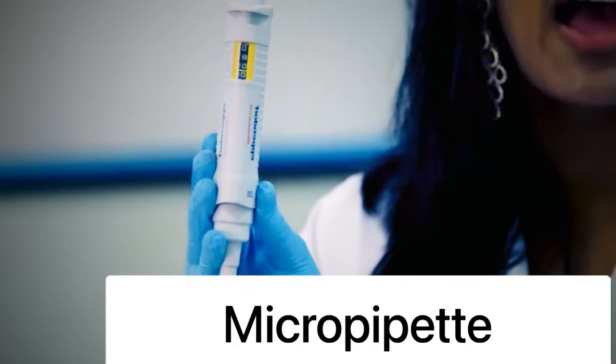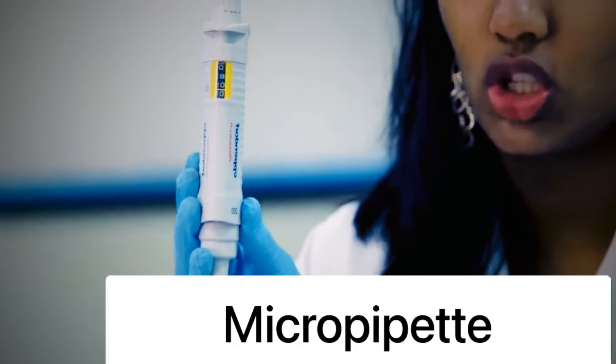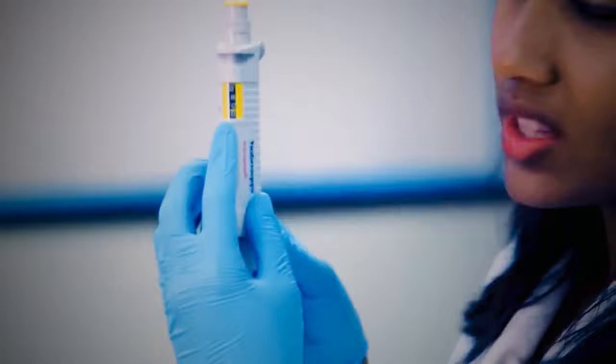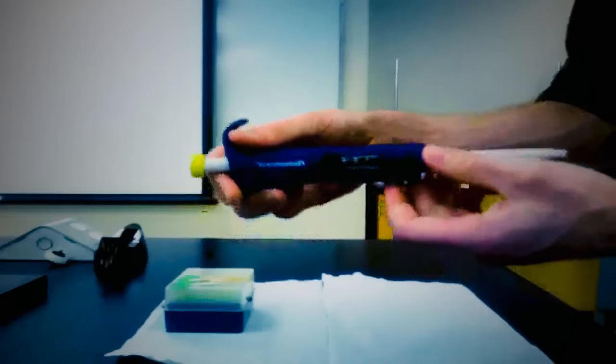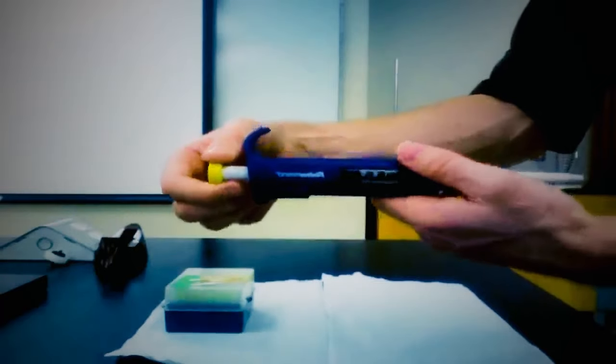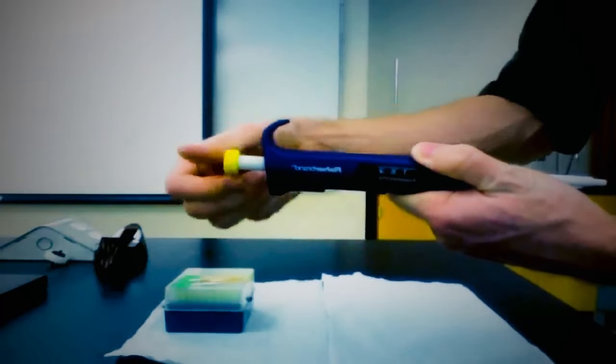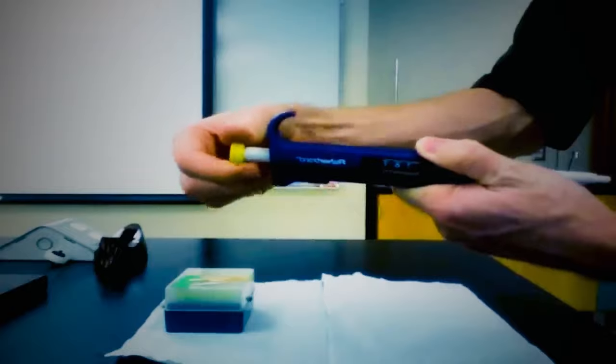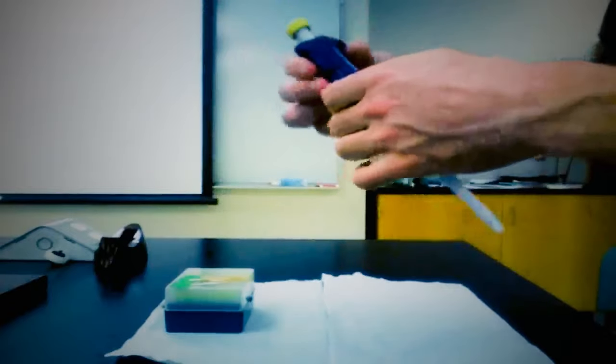Micropipet. Pipets and micropipets are invaluable pieces of laboratory equipment used to draw up, measure, and deliver accurate volumes of liquid. The difference between the two is that micropipets measure between 1 and 1000 microliters, while pipets generally start at 1 milliliter.